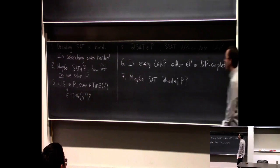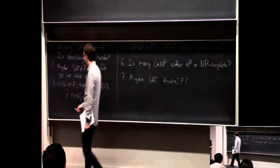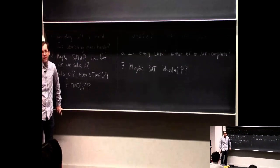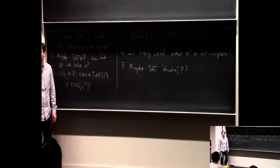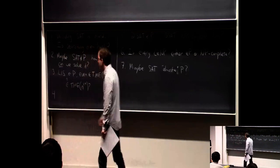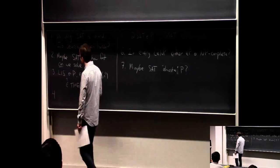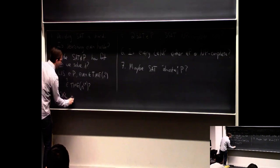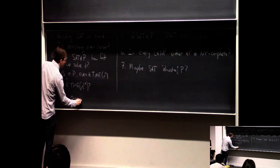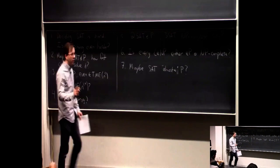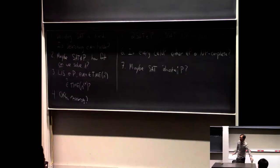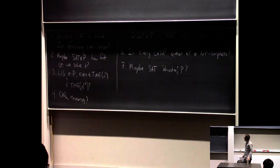William pointed out there's no question number 4. Somebody suggested parallelism — yeah, we're going to talk about that. Other resources: space complexity, randomness complexity, and parallel complexity is a good one too, like if you want to minimize the number of processors you use trying to solve a problem fast.